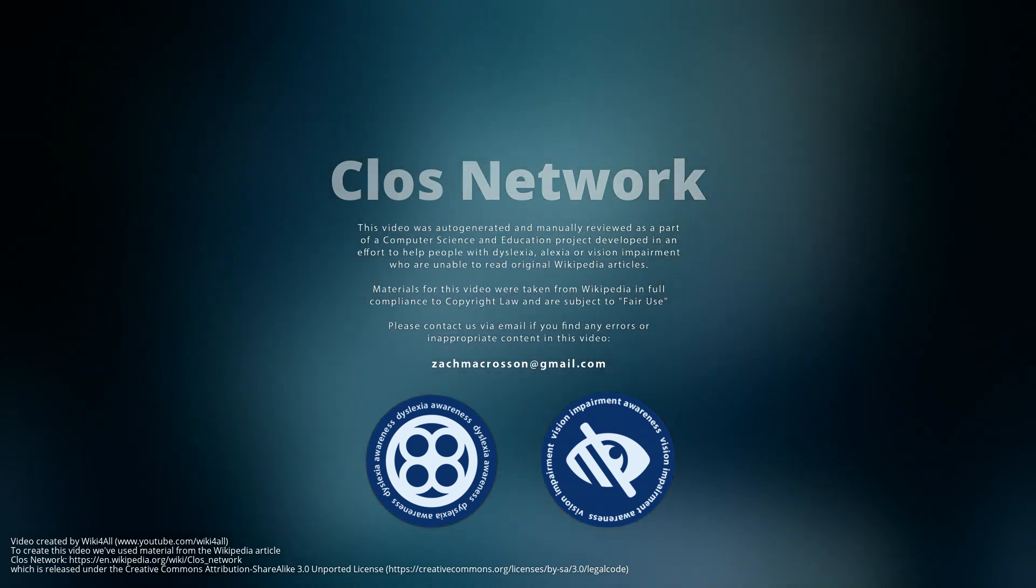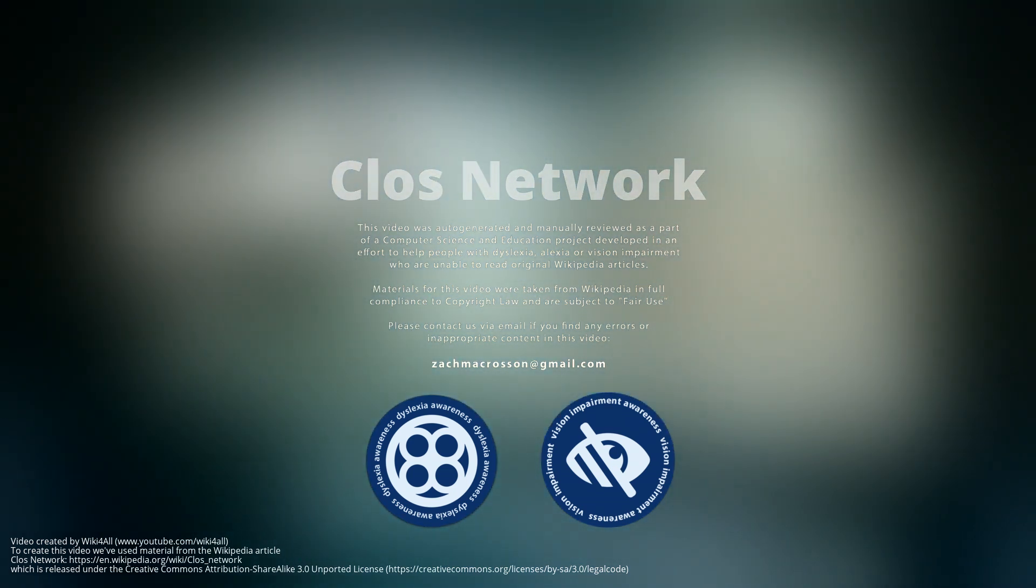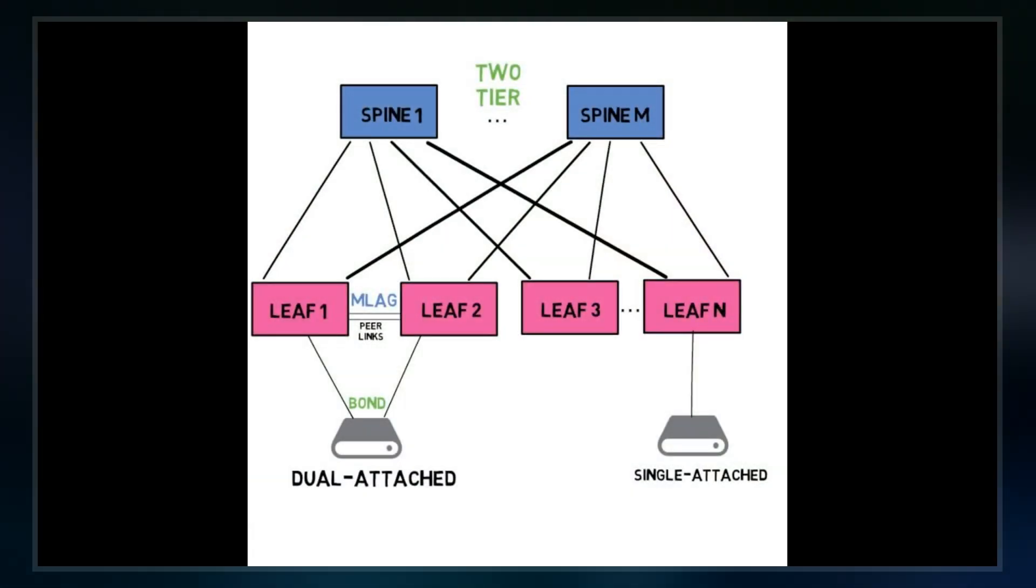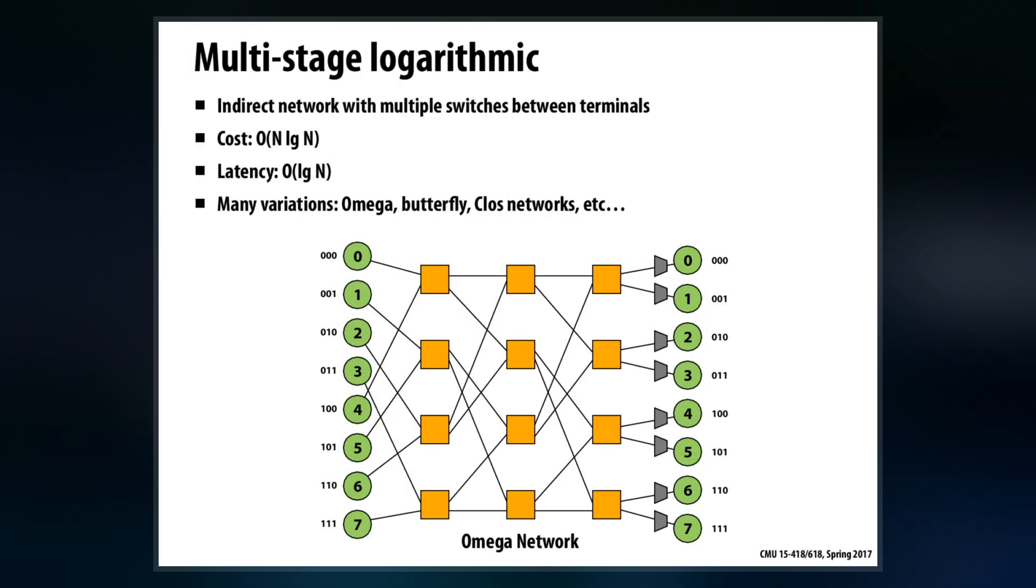In the field of telecommunications, a Clos network is a kind of multistage circuit switching network which represents a theoretical idealization of practical multistage switching systems. It was invented by Edson Irwin in 1938 and first formalized by Charles Clos in 1952.